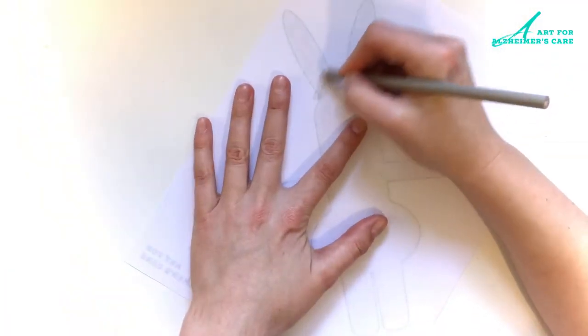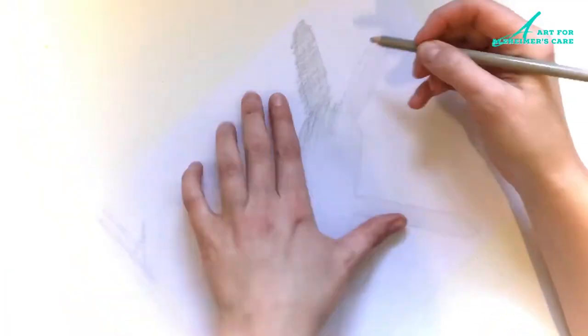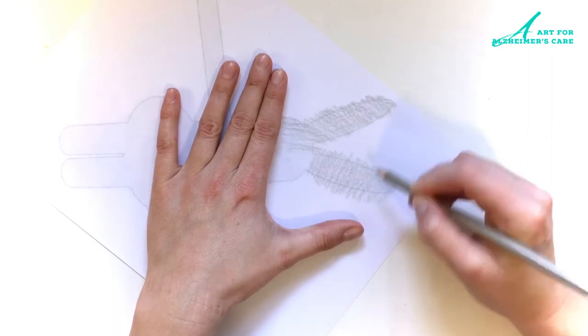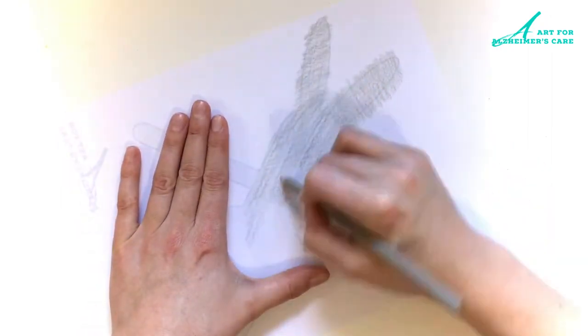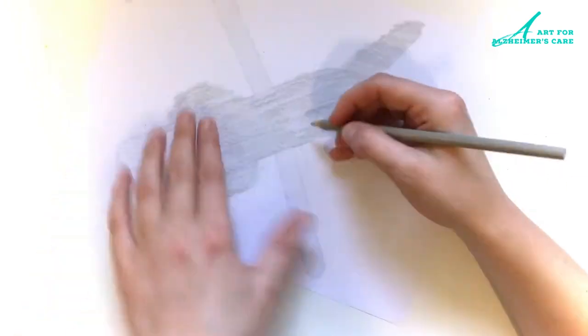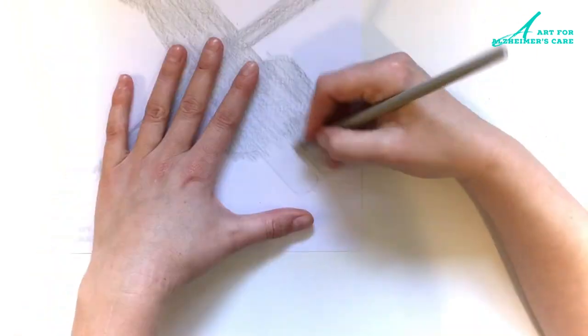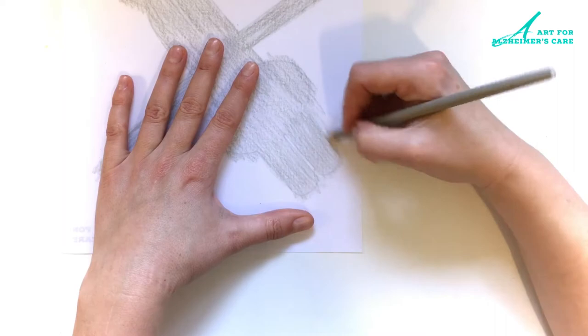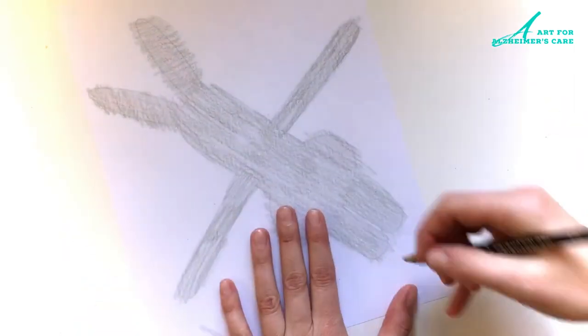After coloring in the front side, I am just going to flip it over and give a quick color to the backside as well. Because when sitting on the table, the dinner guests that are across from me will be able to see the backside of my bunny. So I just wanted to make sure that both sides are covered.